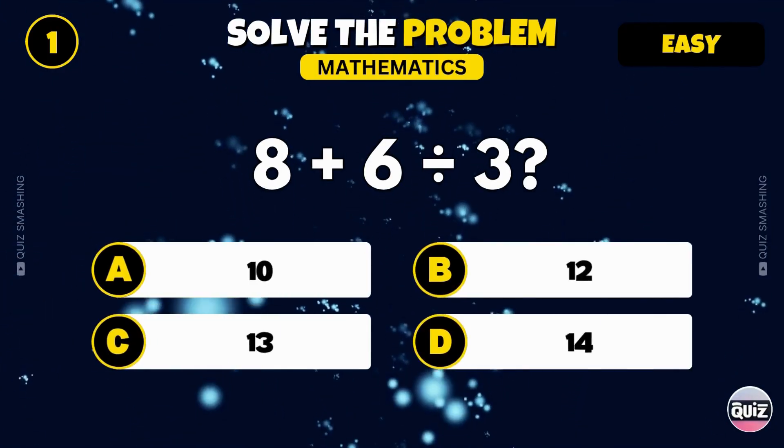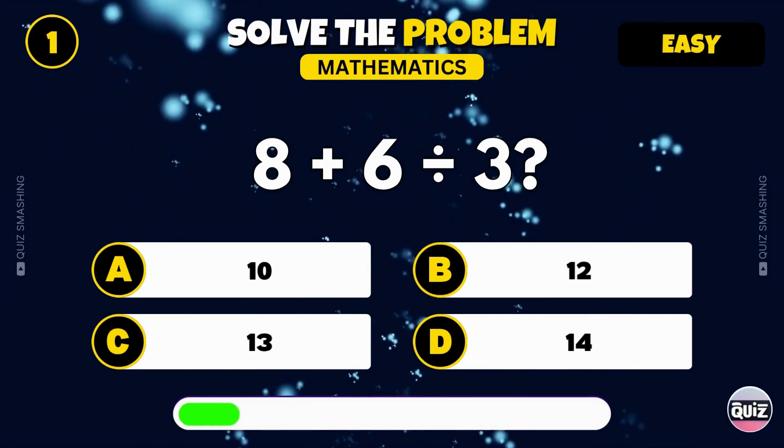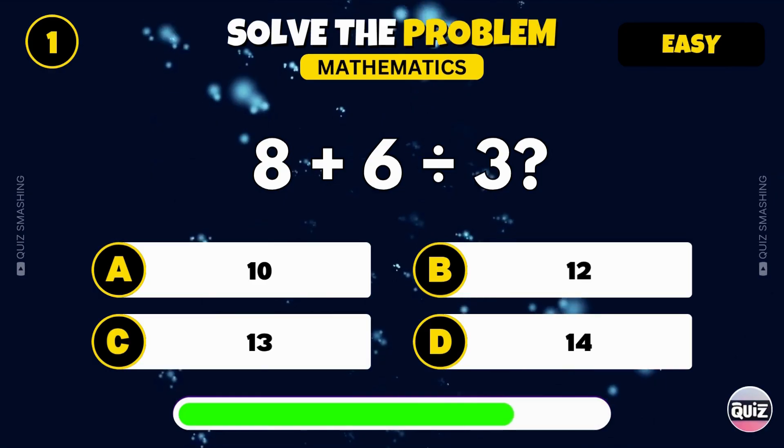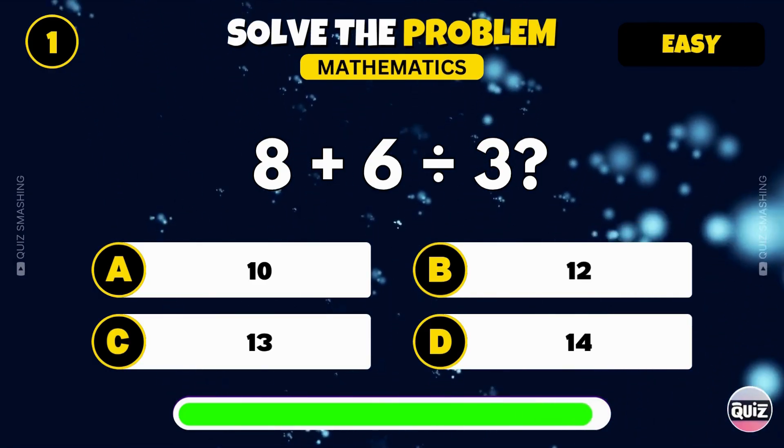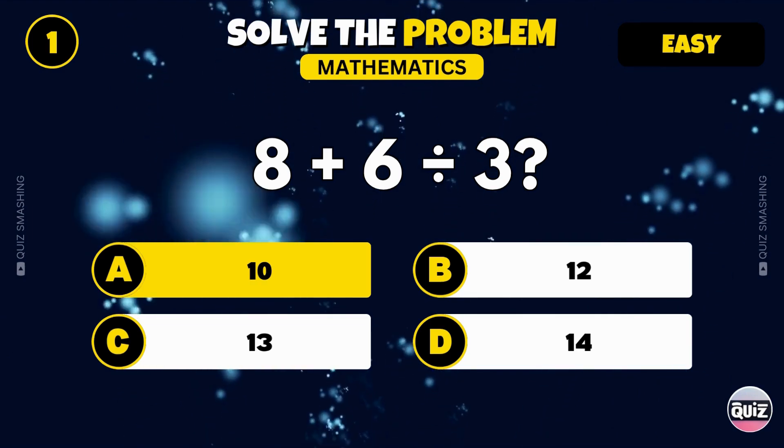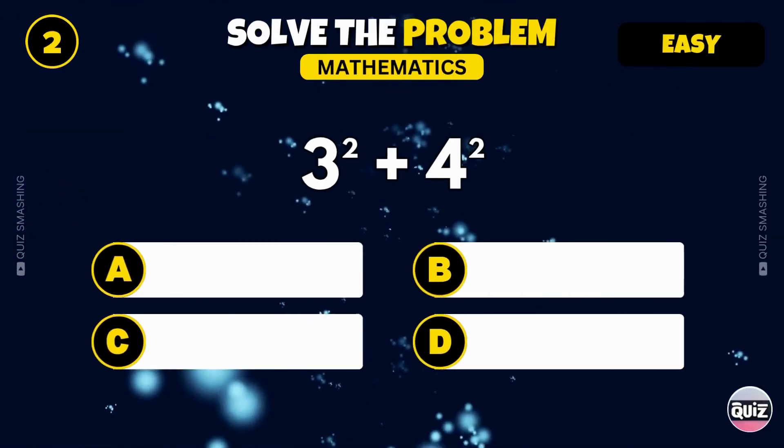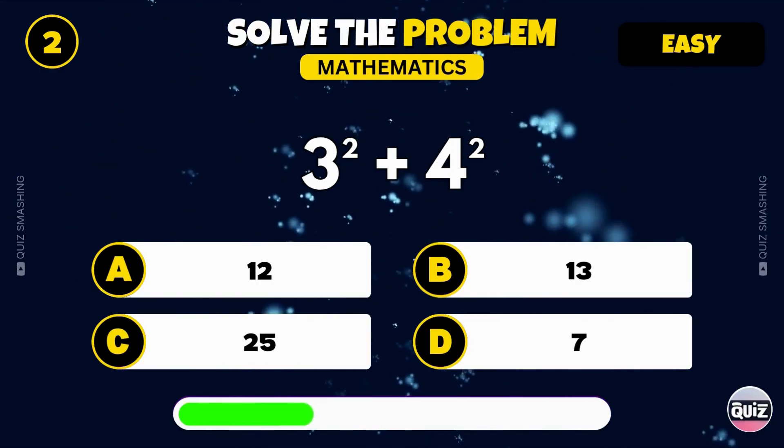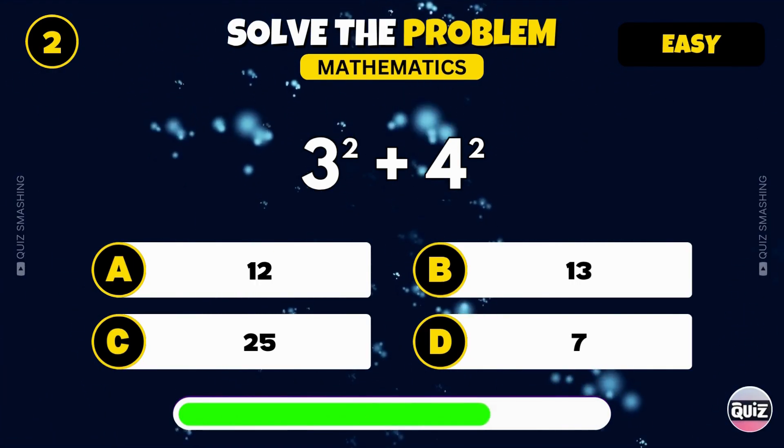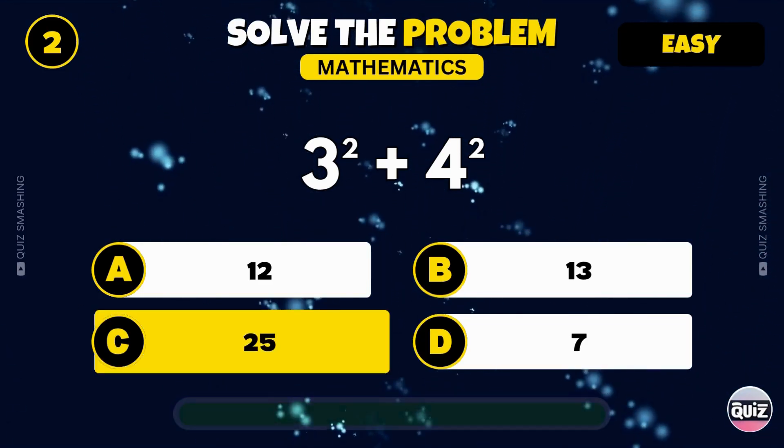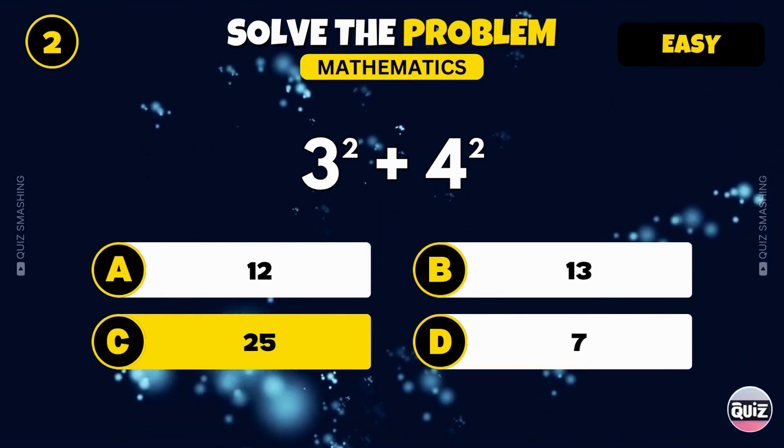What is the value of 8 plus 6 divided by 3? That's right, the answer is 10. Simplify 3 squared plus 4 squared. You got it, the answer is 25.